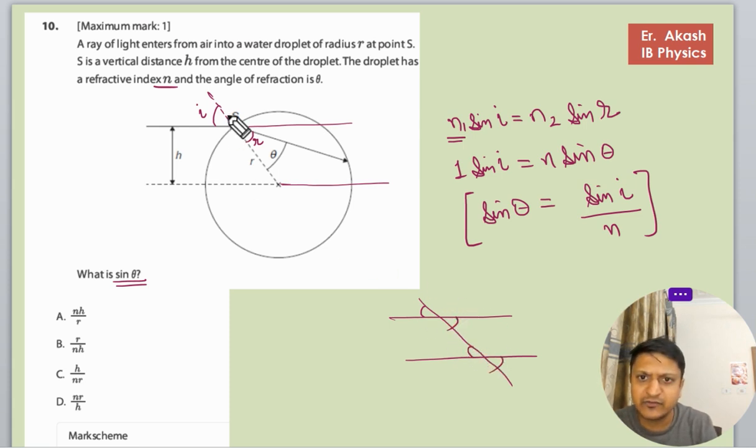When we extend this, this angle will be equal to this, and these angles will be equal to each other. This will be i, so this is h.